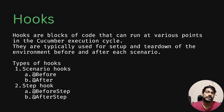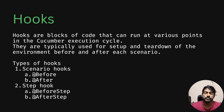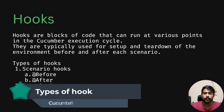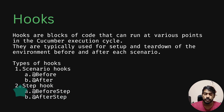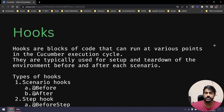If you know TestNG, hooks are similar to TestNG annotations like Before Method or After Method. In TestNG we have annotations like Before Method, After Method, Before Class, After Class, Before Test, After Test, Before Suite, After Suite, and Before Group. In Cucumber it's very simple — we only have four hooks. Two are part of your scenario: Before and After. Two are part of your steps: Before Step and After Step.